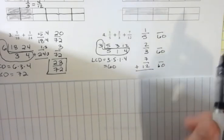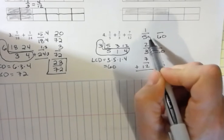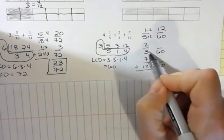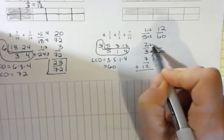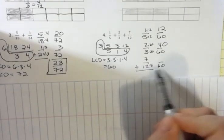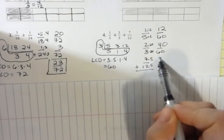The fractions that I'm writing are equivalent fractions. 5 times 12 is 60. So, 12 times 1. 3 times 20 is 60. 2 times 20 is 40. And 5 times 12 is 60. 7 times 5 is 35.